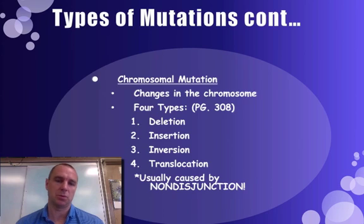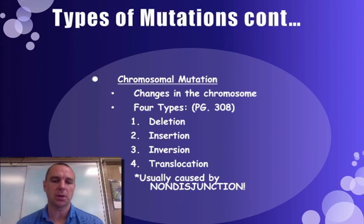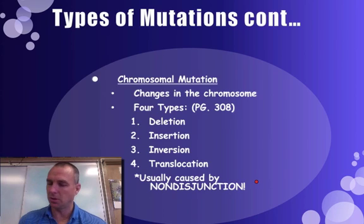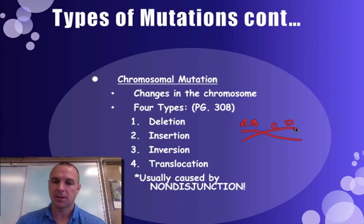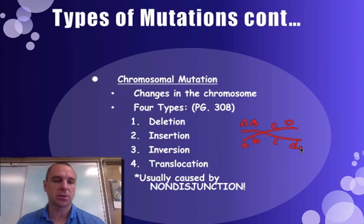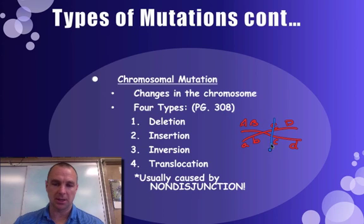The third type of mutation is a chromosomal mutation. Turn to page 308 in your book — these four types are there and they make total sense. It's a change in the actual chromosome. You've got a chromosome with letters like A, B, C, D representing alleles. In deletion, one of these is going to be eliminated, so you lose part of the chromosome.